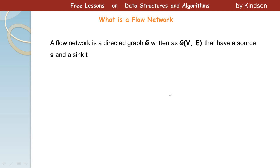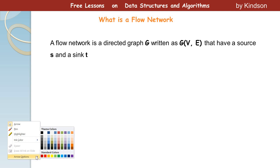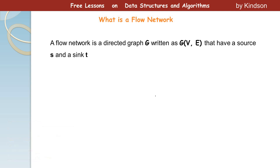What is a Flow Network? You know what a network is, but a Flow Network is a different kind of network. The first thing about a Flow Network is that it is a directed graph G, written as G(V,E), that has a source S and a sink T. When we talk about a directed graph, we are talking about a graph that has arrows as edges. A Flow Network is a graph G, and this is the name of the graph.